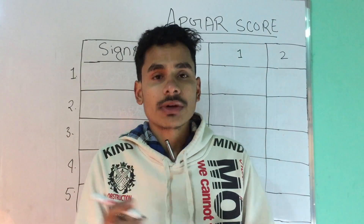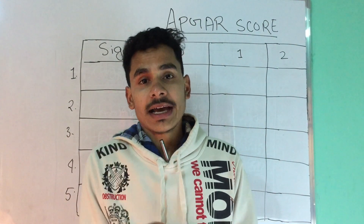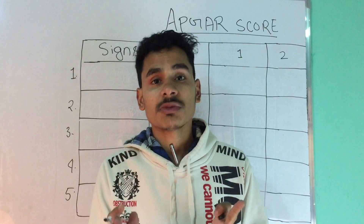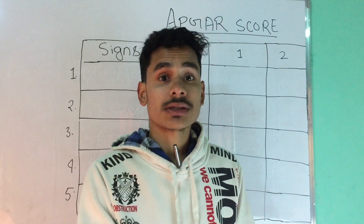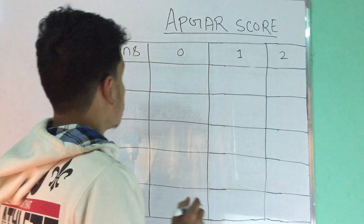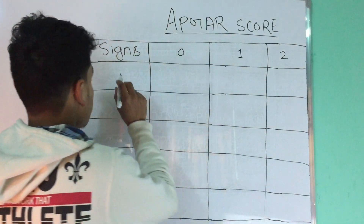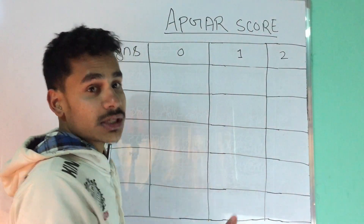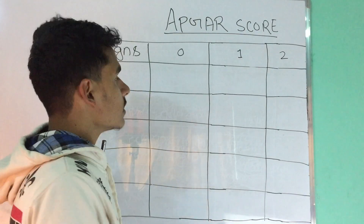Hello everyone, today we are going to discuss the APGAR score, and I have a very easy mnemonic so that you can memorize the APGAR score in just 30 seconds. So let's start. The APGAR score has five different signs we have to assess when a baby is handed over to us.